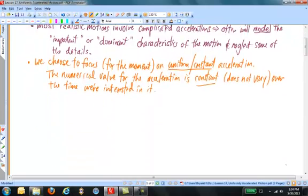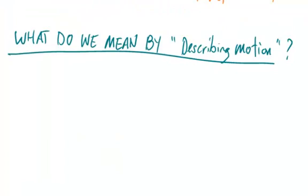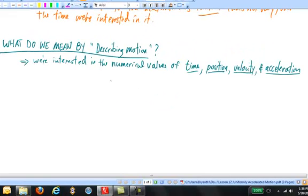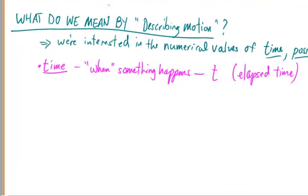Now, what do we mean by describing motion? Here's what we mean. It means that we're interested in four general quantities. These are the quantities of time, position, velocity, and acceleration. Let's begin with time. Time, which means when something happens, is represented by the variable t. Technically speaking, what we mean by the variable t is the elapsed time. Elapsed time meaning the time between when we started our clock and the moment that we're interested in it.